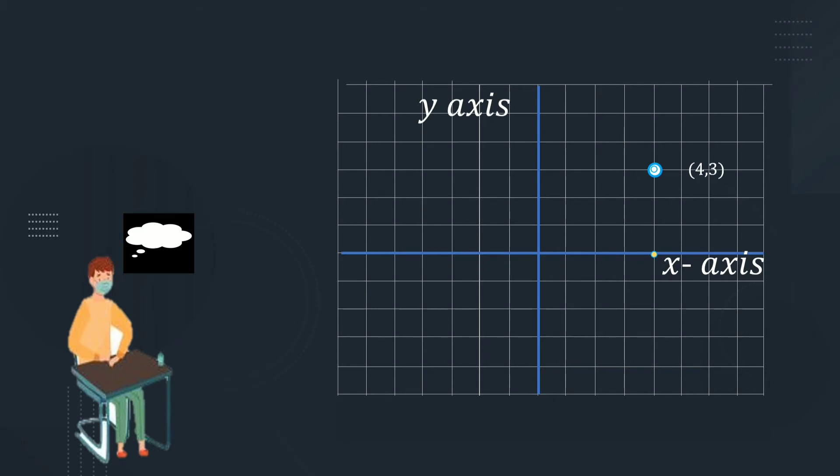This point, the distance from this point from the x-axis is 0 units. Here 1 unit, here 2 units. So the distance up to here is 3 units.